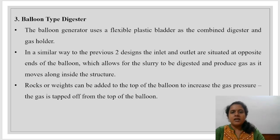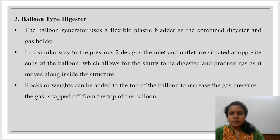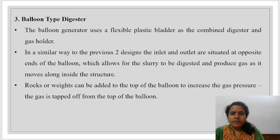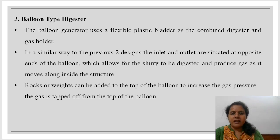Balloon type digester: the design uses a flexible plastic bladder as the combined digester and gas holder. In a similar way to the previous two designs, inlet and outlet are situated at opposite ends of the balloon, which allows the slurry to be digested and produce gas as it moves along inside the structure. Rocks and weights can be added to the top of the balloon to increase the gas pressure. The gas is tapped off from the top of the balloon.